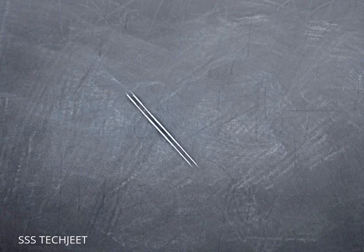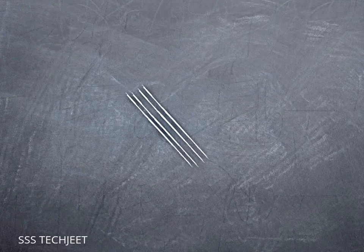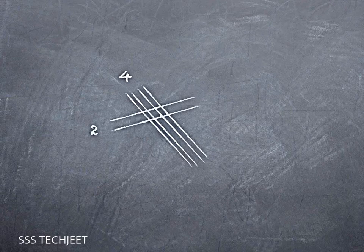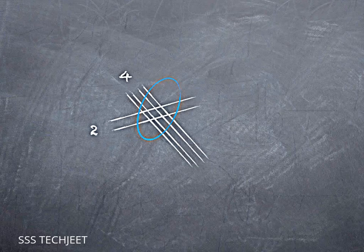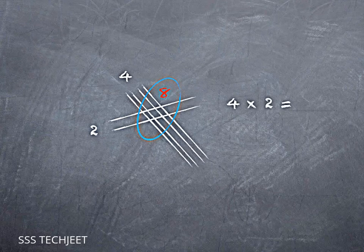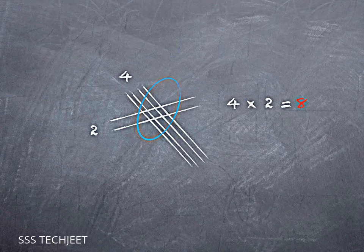First of all, notice that if I wanted to multiply, say, 4 times 2, I could represent 4 with lines or sticks or whatever, and then cross that with 2 more, and if I count up those intersections, there are 8 in there. So what this picture really represents is the multiplication fact, 4 times 2, equals 8, except I don't have to remember it. It's right there in front of me.